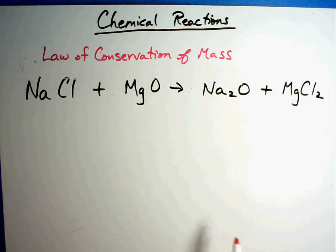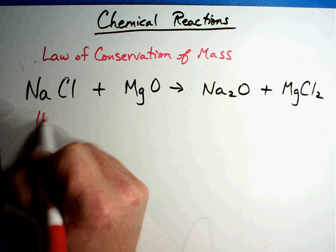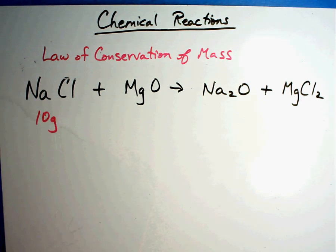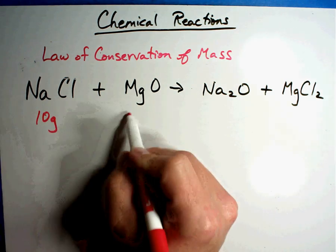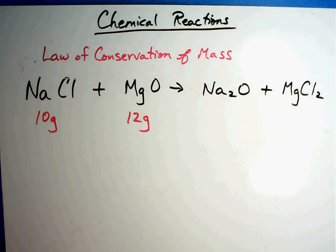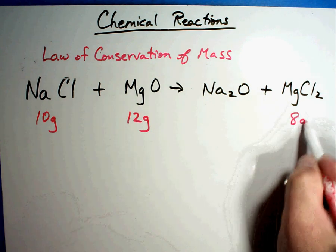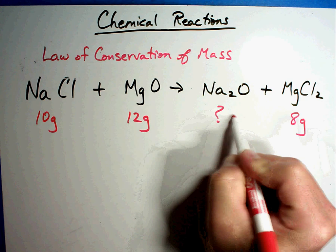Let me show you an example. If they told you that you had 10 grams of this and 12 grams of this, and that 8 grams of this is made, and they want to know how many grams of this, it's a very simple problem. Here's how it works: you add these two values because there's a plus sign.